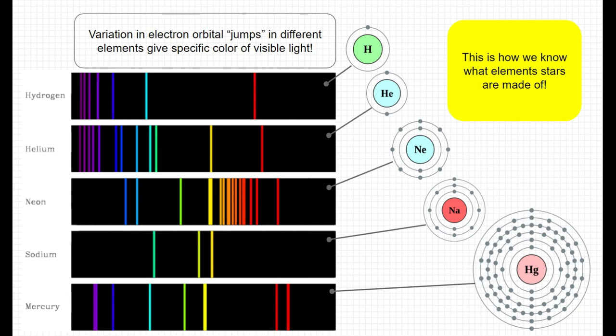In fact, this is how we know what stars are made out of. We know that stars have certain elements in them like hydrogen or helium because of the emitted light from them. If we know the signature, the specific fingerprint signature of each spectrum, then we know what that star is made out of, which is super cool.